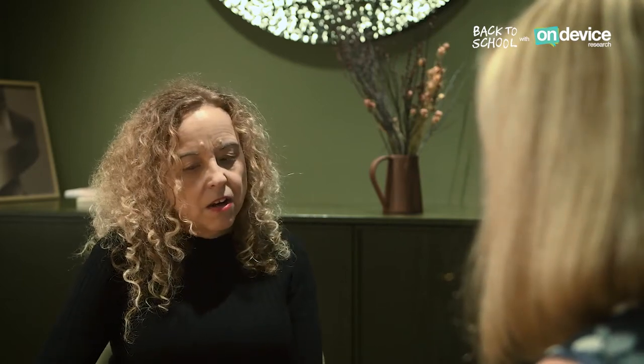So human memory is flawed. Also, we've discovered from our norms database that even though you can't recall seeing the advertising, it does have an effect on your brand metrics. For example, when we look at our norms database for purchase intent, we see a two percentage point uplift in purchase intent for those who we know have been exposed but actually haven't been able to recall the advertising.